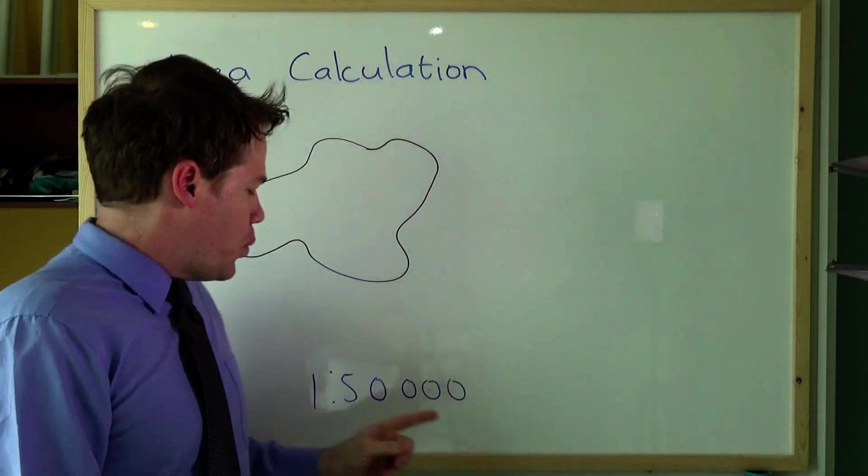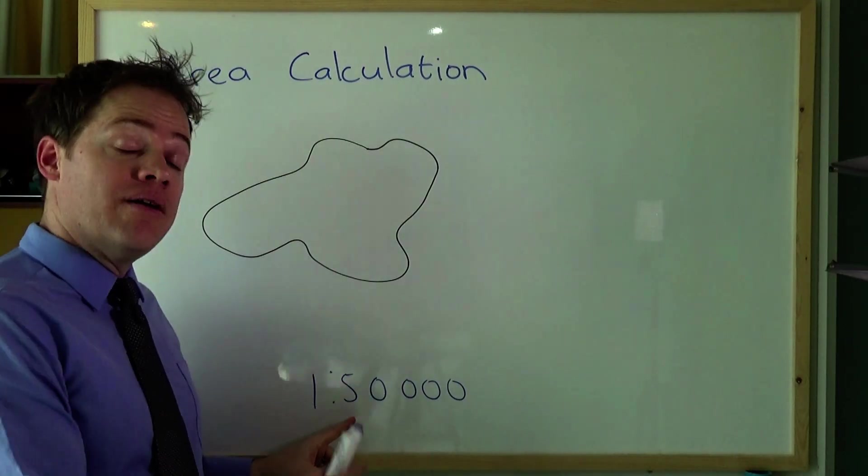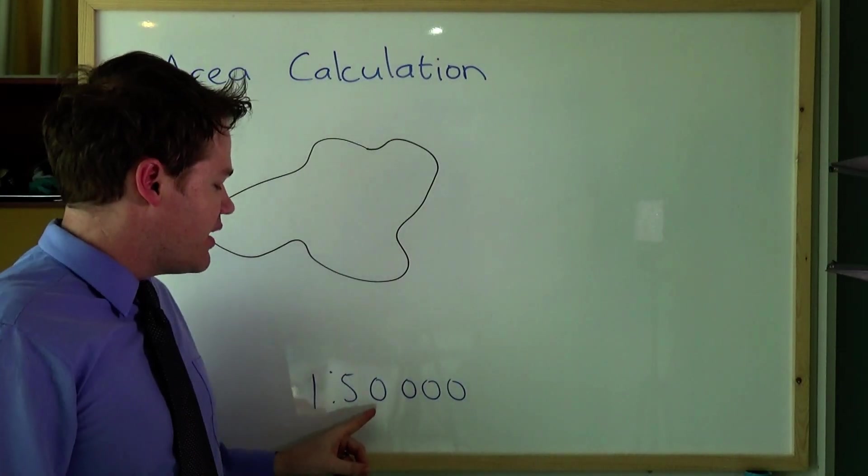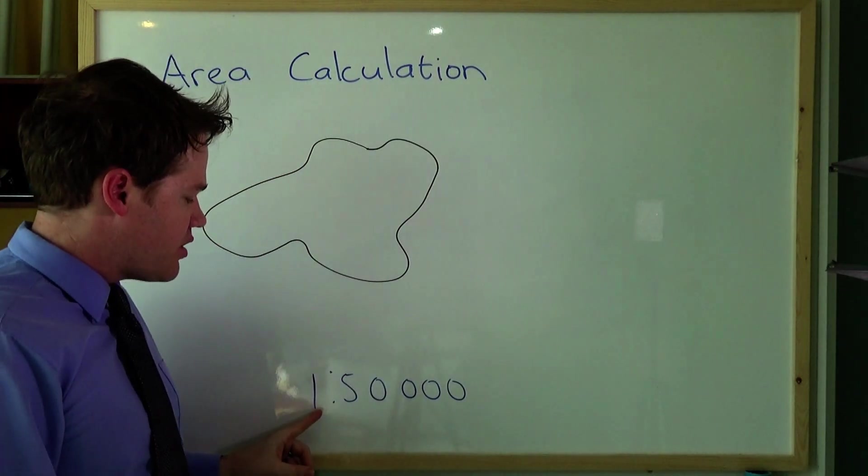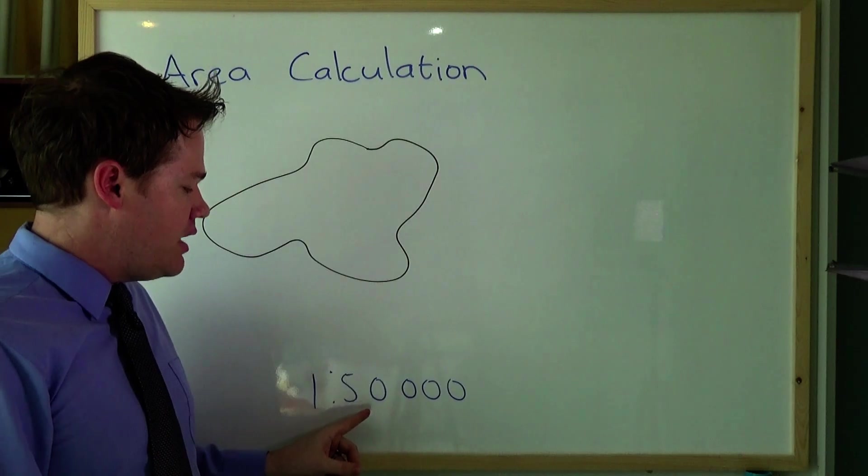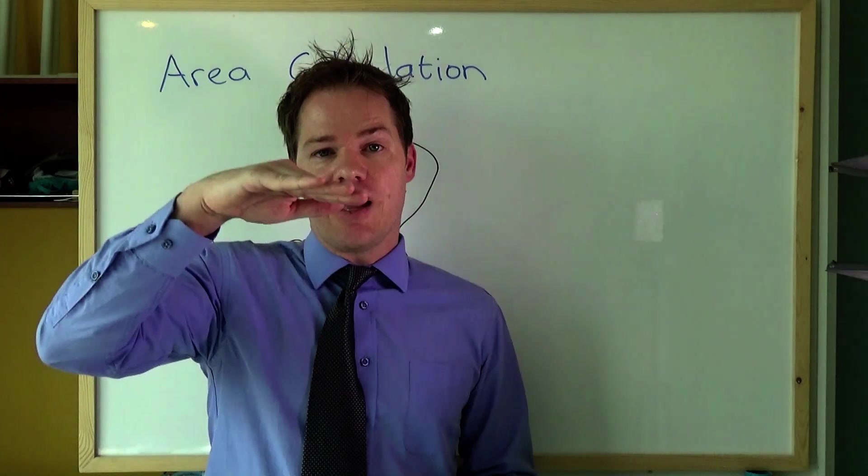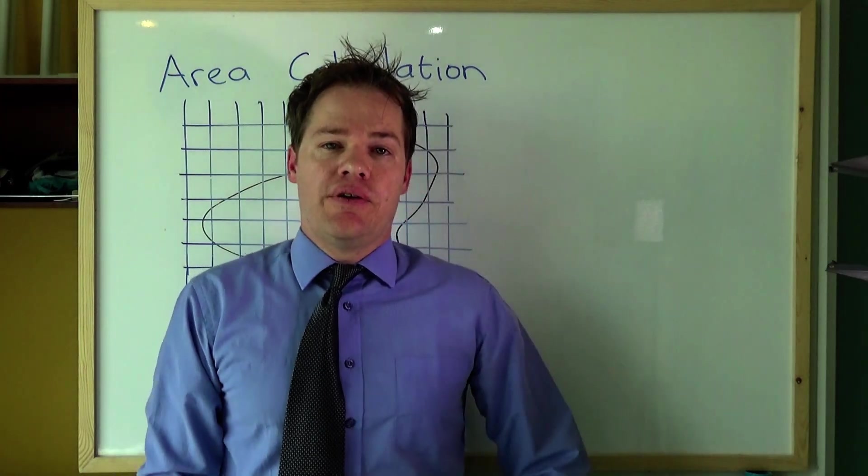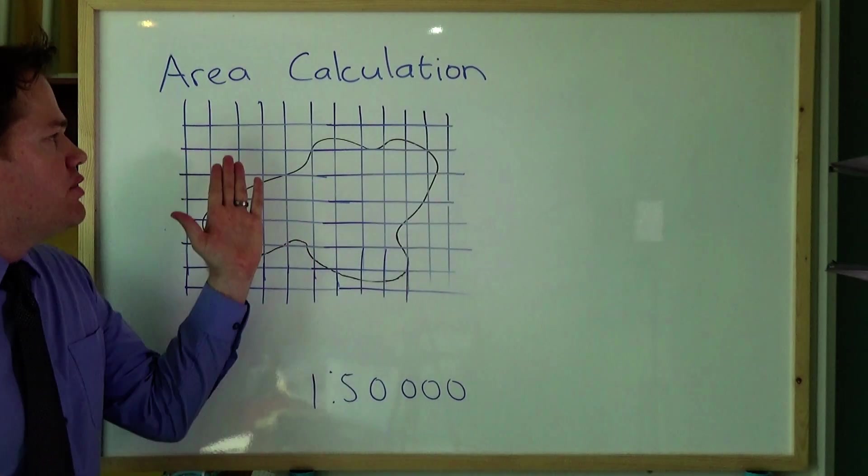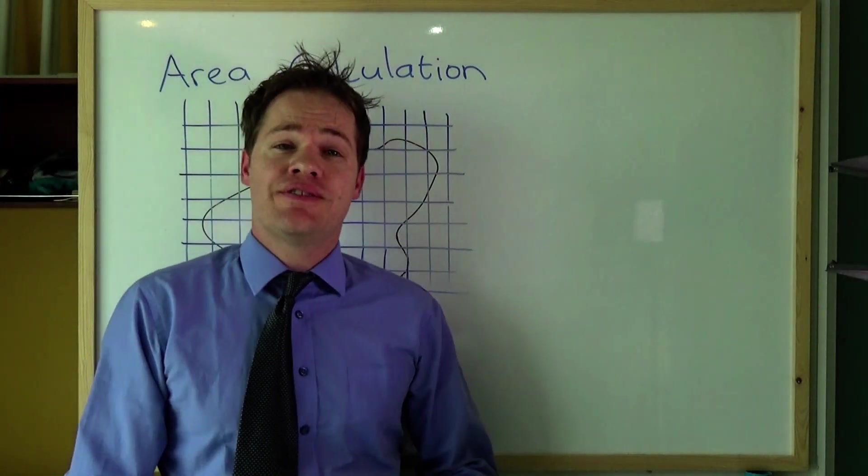So in other words, as the scale suggests, one centimeter on the map equals 500 meters in real life. So two centimeters on the map will then equal one kilometer in real life. In other words each side of the square should then be two centimeters. So these squares are not really two centimeters by two centimeters but let's imagine that it is.